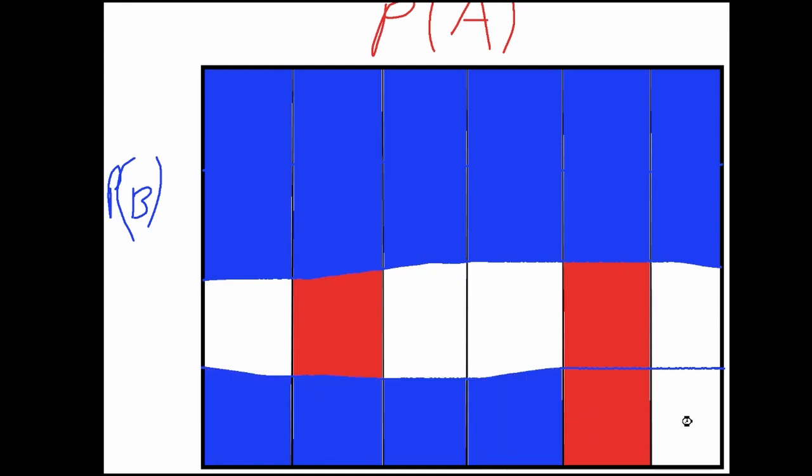Now notice that in some areas these two overlap. They overlap in this square, this square, this square, and similarly in these squares as well.